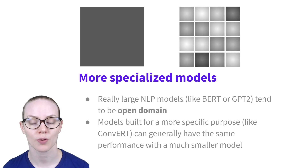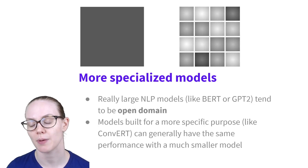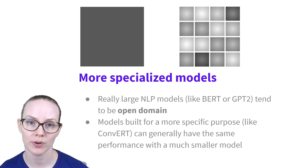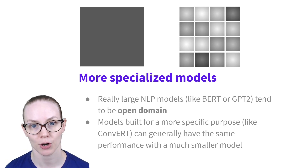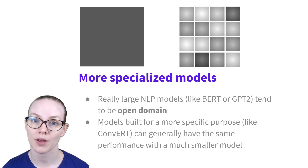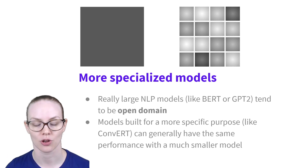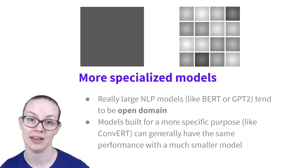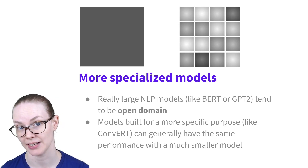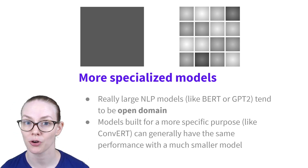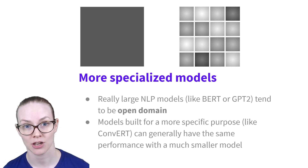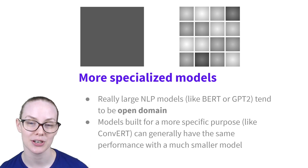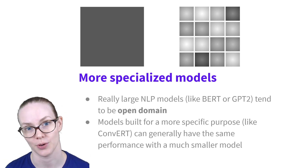Another approach is to train a smaller, more specialized model for the specific task that you're working on. Many of the really large transformer models like BERT, GPT-2, or T5 are trained to do anything — they're what we call open domain, trained to handle any topic. In general, models that have a narrower domain can be smaller with equivalent performance. An example of that is CONVERT, which instead of predicting all of the English language, specifically predicts which turns are likely to occur.